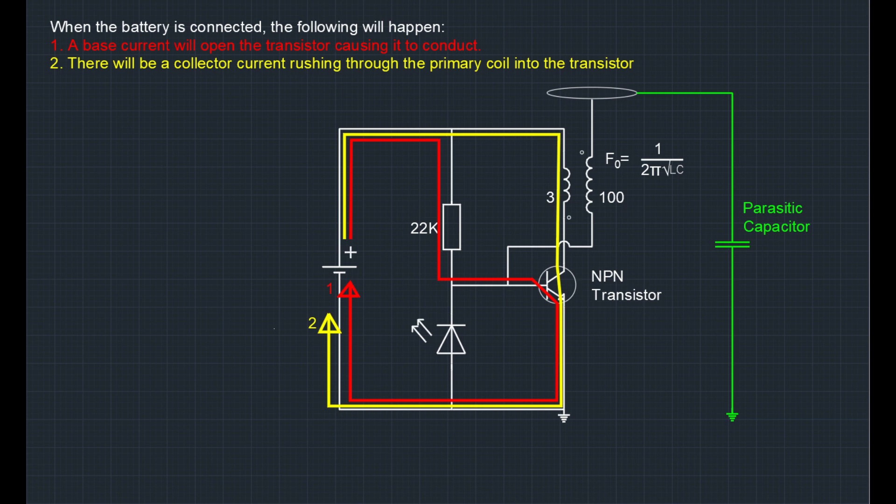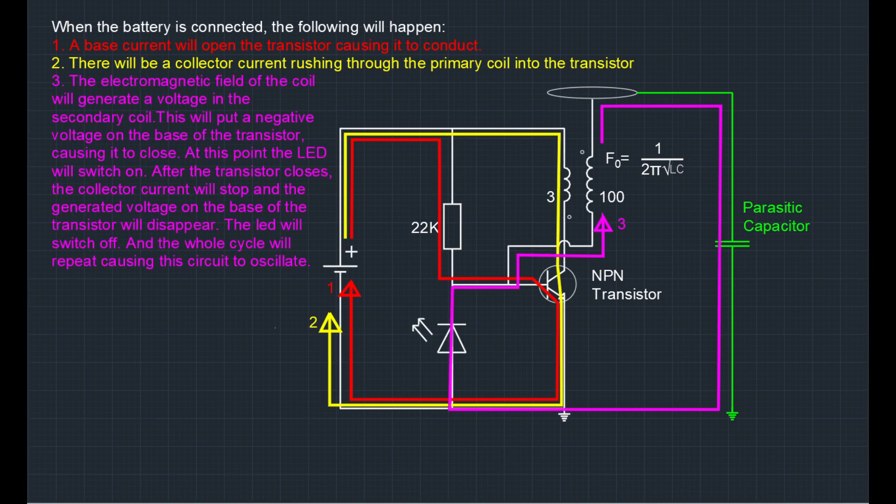It's actually this collector current that causes an electromagnetic field in this primary coil. Since the secondary coil is wound on top of the primary coil, the electromagnetic field that was generated in the primary coil will affect the secondary coil. Therefore the secondary coil will generate a voltage and a current will flow from the coil into the parasitic capacitor, which I will explain later, back to ground through the LED into the transistor and back to the coil.